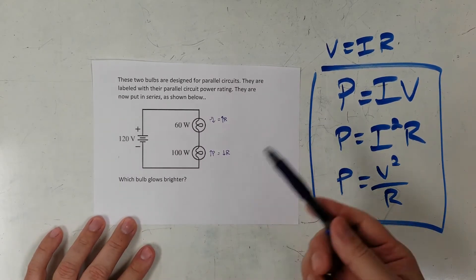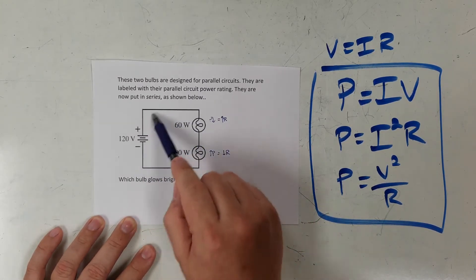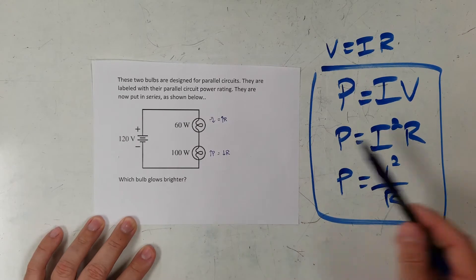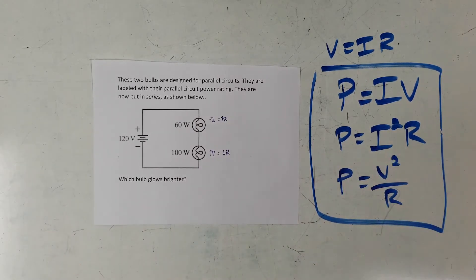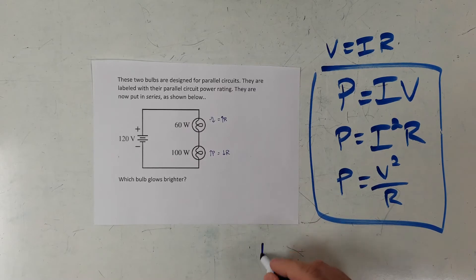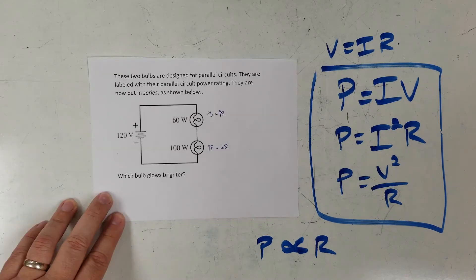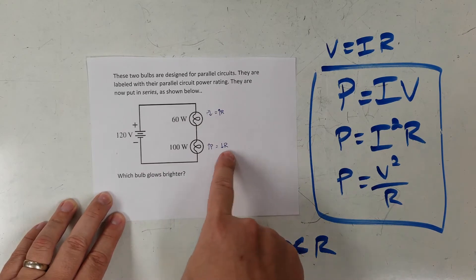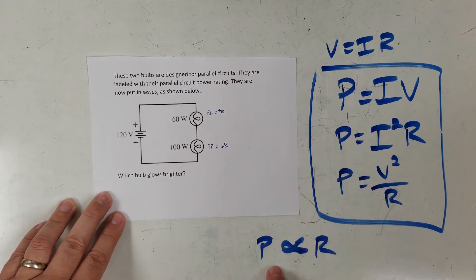Think about what's going to be the same. In a series circuit, the current has to be the same everywhere because of Kirchhoff's junction rule — there's no junction, so current can't change. If I look at the equation P = I²R and keep current the same, that tells me power is proportional to resistance. Big resistance means big power; small resistance means small power. So the 60-watt bulb should be brighter because it has bigger resistance.